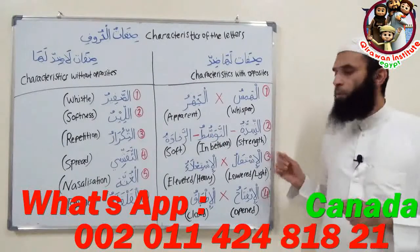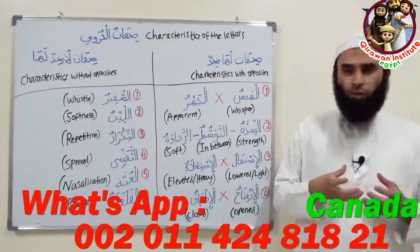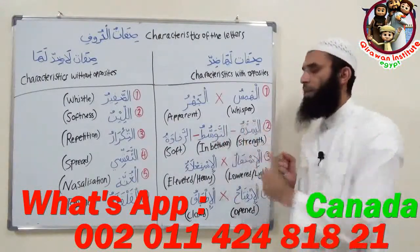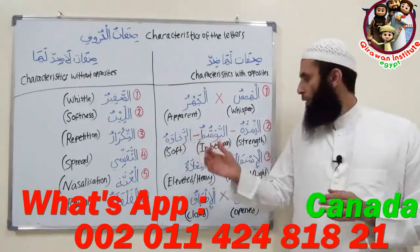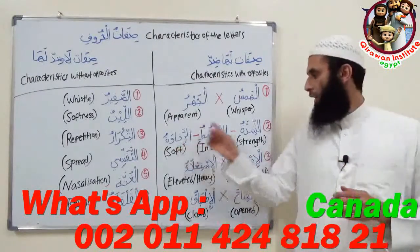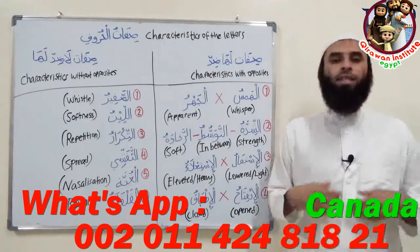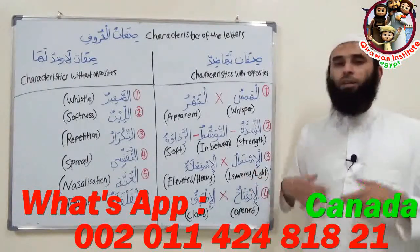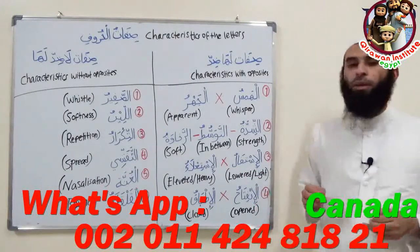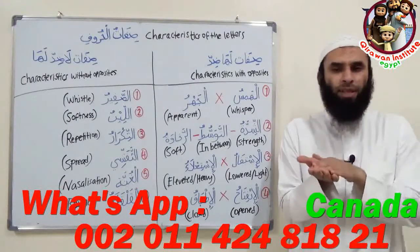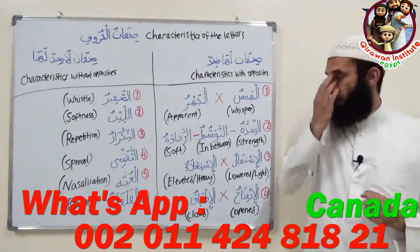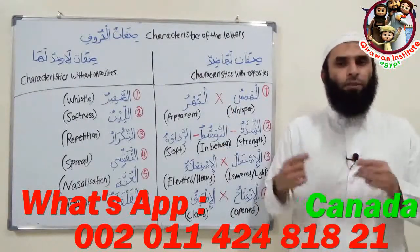We have here Al-Shidda, Al-Tawasut, and Al-Rakhawa. Point number two is to do with the flowing of sound. A group of letters — because of their strength — the sound does not flow with them. A group of letters — because of their weakness — the sound flows with them. And a group of letters, Al-Tawasut, are in the middle — partially Al-Rakhawa and partially Al-Shidda. The third group is Al-Istifal and Isti'la, to do with heaviness and lightness. And fourth, Al-Infitah and Al-Itbaq — to do with whether parts of the tongue are compressed with the roof of the mouth.